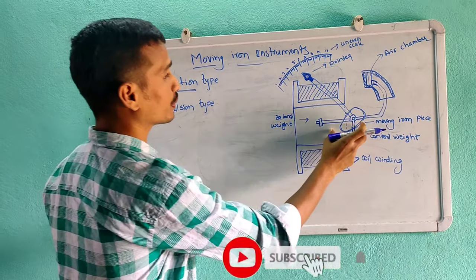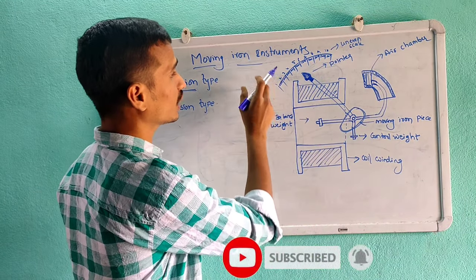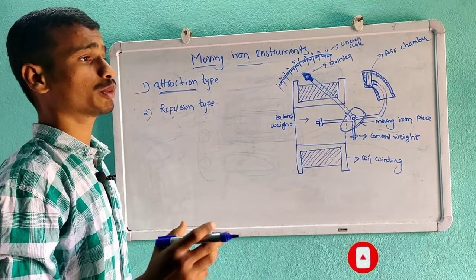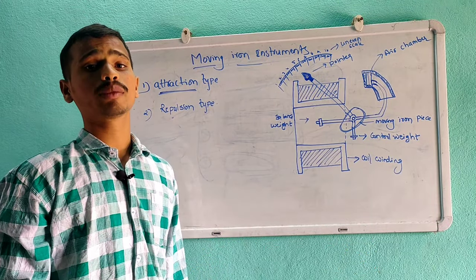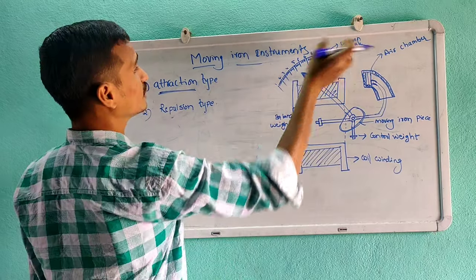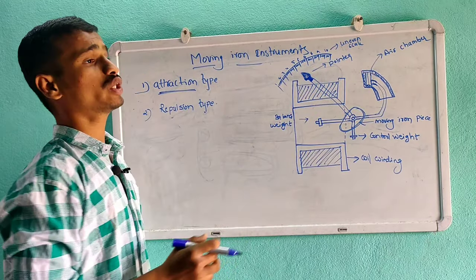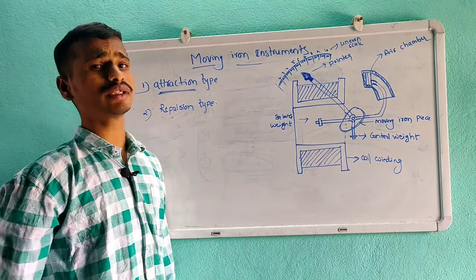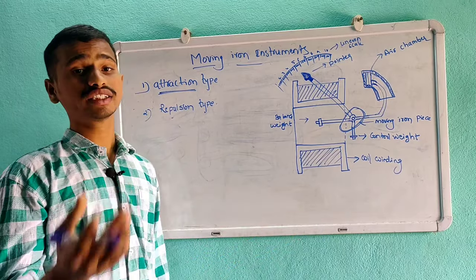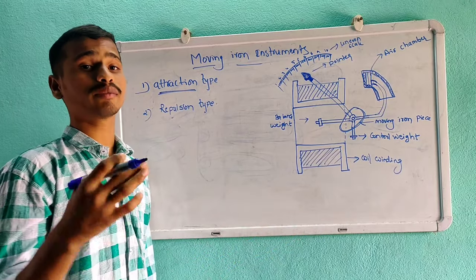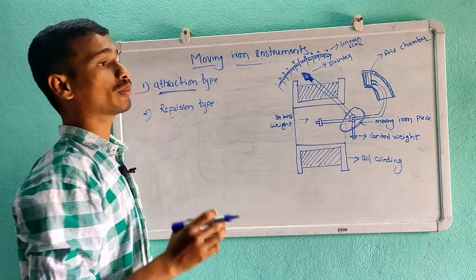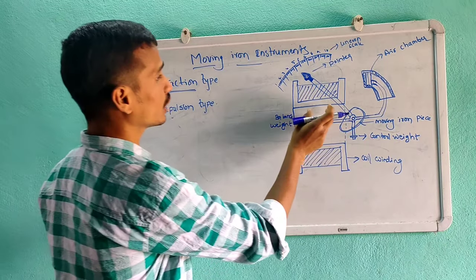Moving iron instruments have an uneven scale, unlike moving coil instruments which have a uniform scale. These instruments can measure DC and AC, giving RMS values of current.